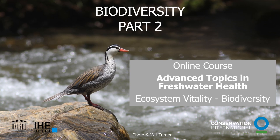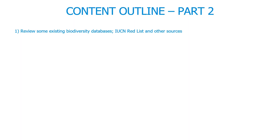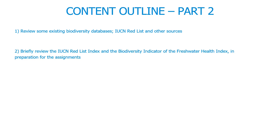Welcome to part two of our lectures on freshwater biodiversity in this course section on ecosystem vitality. In this lecture, we'll start off with where we can find compiled biodiversity data in databases or other sources. We'll highlight the IUCN Red List of Threatened Species, since we use that in the Freshwater Health Index's biodiversity indicator. We'll look at indicators for the state of freshwater biodiversity, and in particular, the IUCN Red List Index and the biodiversity indicator of the Freshwater Health Index.